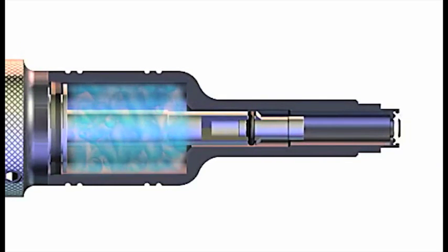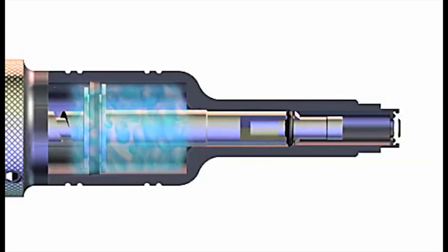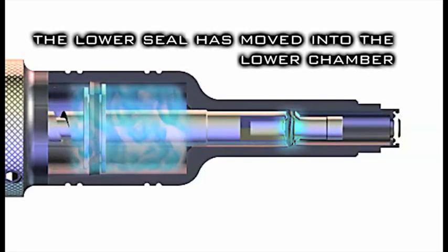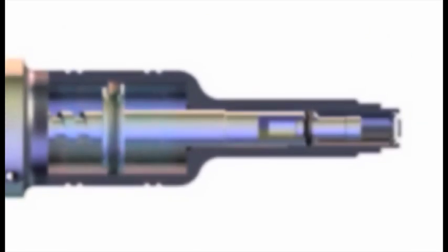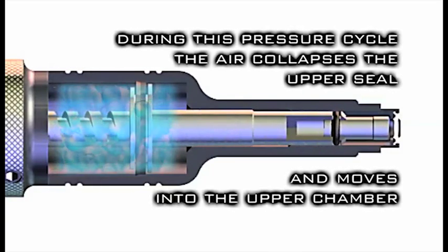As the injector moves into its pressure cycle and the lower seal re-enters the lower chamber, you might think that the upper seal will push the air back down towards the lower piston seal. This does not happen because the upper seal is collapsible. The top edge of the lower seal collapses inward, which allows the air to push past it and remain in the upper chamber.